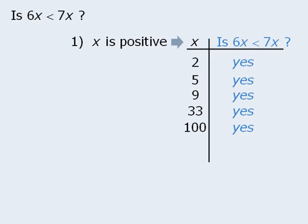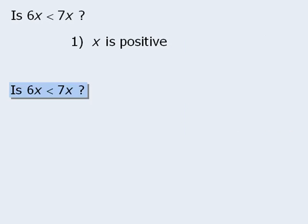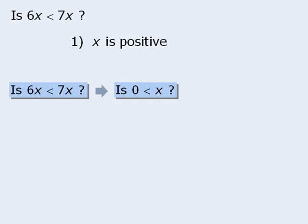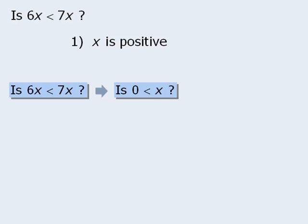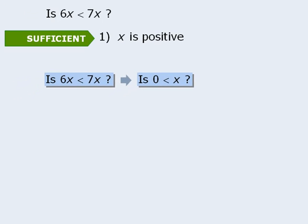In this particular example, the best strategy would be to first rephrase the target question. If we take the target question and subtract 6x from both sides, we get a new target question: is 0 less than x? In other words, is x positive? Now statement 1 tells us that x is positive, so statement 1 must be sufficient.